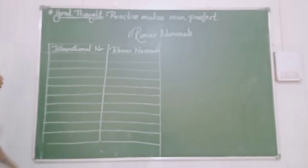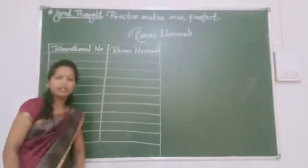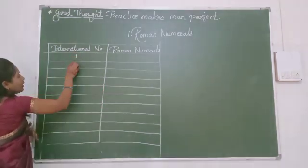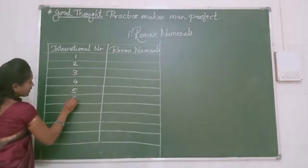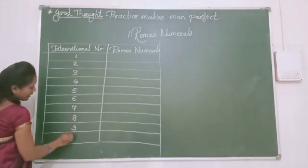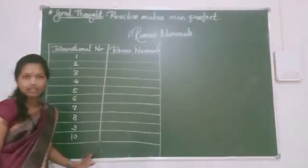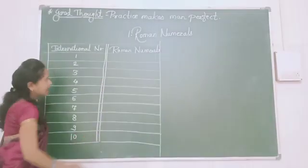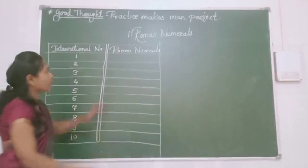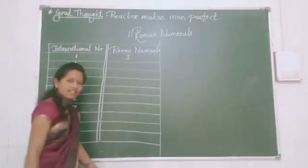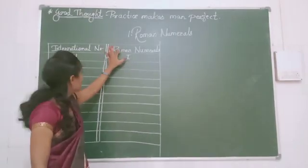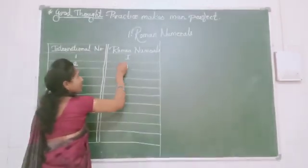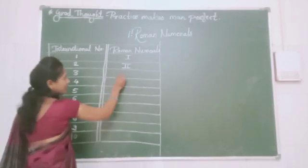Now pay attention. For 1, we write Roman numeral I — just like the alphabetical letter I. For 2, which is 1 plus 1, we write double I — II. For 3, which is 1 plus 1 plus 1, we write triple I — III. For 4, we think of it as 5 minus 1. For 5, we write V. So for 4, we write I before V — that is IV. For 6, which is 5 plus 1, we write VI. For 7, which is 5 plus 2, we write V with double I — VII. For 8, which is 5 plus 3, we write V with triple I — VIII.